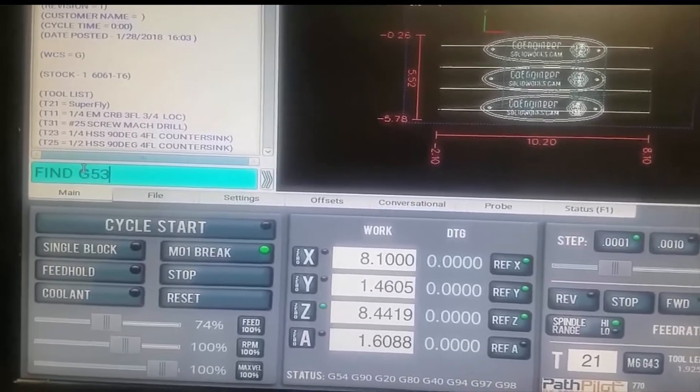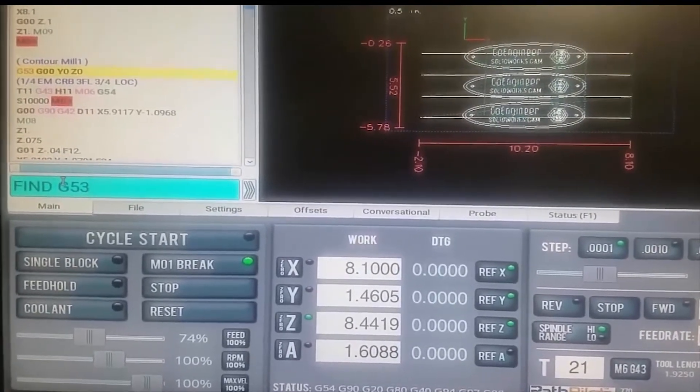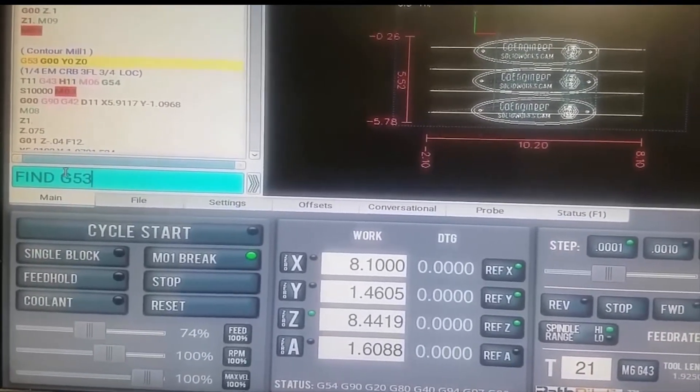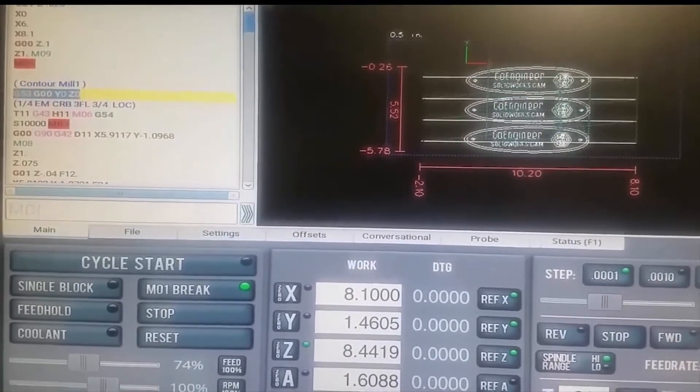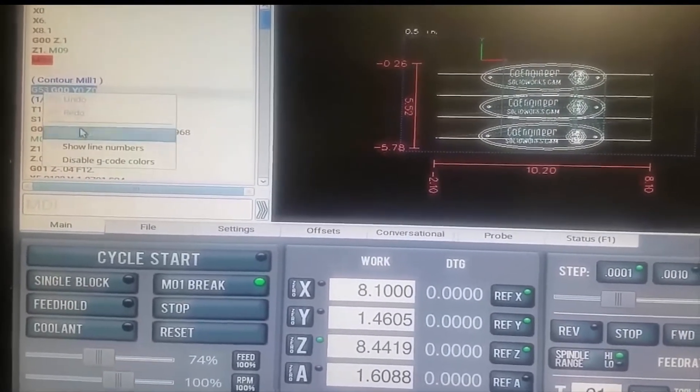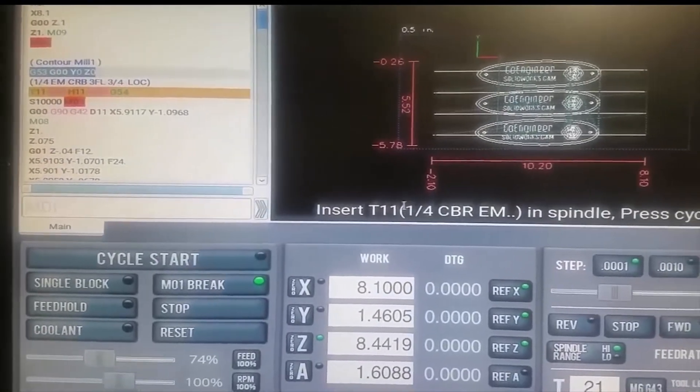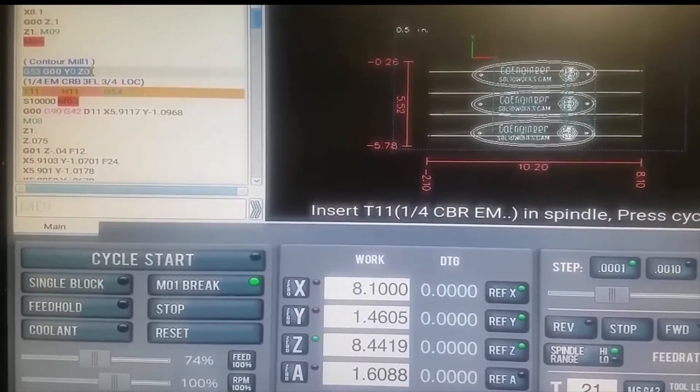So what I'm gonna do is I'm gonna find G53 - that's the start line for each one of the operations. This one is for the superfly and the next one is now for the quarter inch. I'm gonna select this line here and I'm gonna say set a start line. And when I go cycle start it now says please insert the quarter inch end mill. We start the program from this line, saving me time.